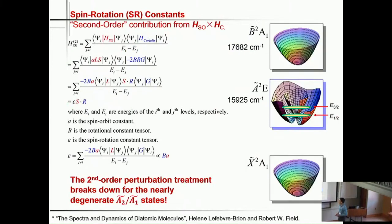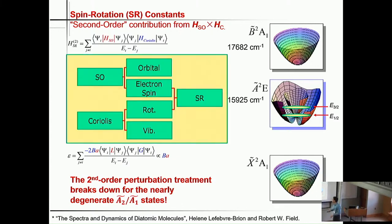I want to say a few words about the spin-rotation interaction. Most of the time when we simulate rotational spectra of polyatomic molecules, we have the rotational part and the spin rotation part. But actually, in most cases, the dominant contribution to the spin-rotation constant is due to the cross term of the spin-orbit term and the Coriolis term. The spin-orbit interaction is due to coupling between orbital angular momentum and electron spin. Coriolis interaction is the coupling between molecular nuclear vibration and nuclear rotation. So if you take the spin from spin-orbit and the rotation from Coriolis, you get a spin-rotation interaction.